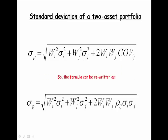So the formula can be rewritten as follows: the standard deviation of a two-asset portfolio equals W_I squared times sigma_I squared plus W_J squared times sigma_J squared plus two times W_I times W_J times the correlation between the two assets times sigma_I times sigma_J.